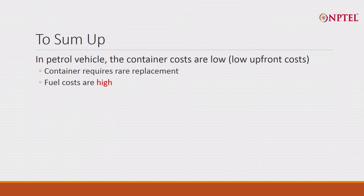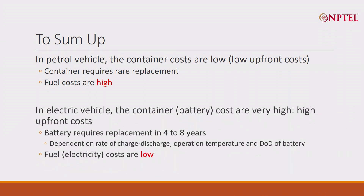To sum up: in a petrol vehicle, container costs are low with low upfront cost, the container rarely needs replacement, but fuel costs are high. In an electric vehicle, container costs — the battery — are very high with high upfront cost, and the battery requires replacement every 4 to 8 years depending on charge-discharge cycles, operating temperature, and depth of discharge. But the fuel cost is very low, and it is also environmentally friendly. Energy storage plays a very important role in vehicles.